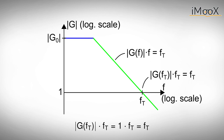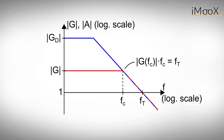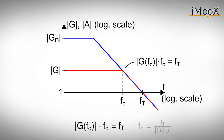The gain bandwidth product is given in the datasheets and tells us how fast our circuit can operate if we set a certain gain. The blue line is the frequency response of our stand-alone operational amplifier. The red line represents the frequency response of our completed circuit, for example a non-inverting amplifier with gain G. Where the red line meets the blue one, the gain of our circuit starts to decrease. The corresponding frequency is the corner frequency fc, up to which our circuit performs as intended. The gain and corner frequency are related to the transit frequency. The higher we want our gain to be, the more we have to sacrifice on corner frequency. In other words, the higher the gain, the slower our circuit will operate.